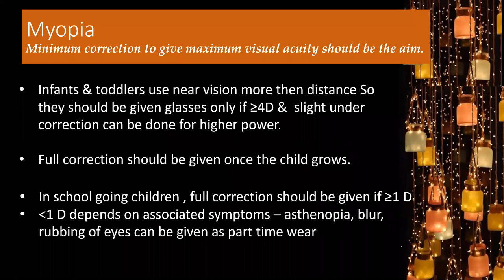For myopia prescribing: the aim is minimum correction to achieve maximum visual acuity — but this does not mean under-correcting. Infants and toddlers use near vision more, so glasses are needed only if 4 or more diopters is present; slight under-correction can be done for higher powers given their shorter working distance. For school-going children (more than four to five years), give full correction if myopia exceeds one diopter. Below one diopter, prescribe based on symptoms like asthenopia, headache, blur, or eye rubbing — initially as part-time wear.